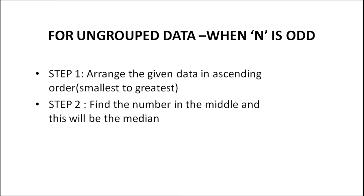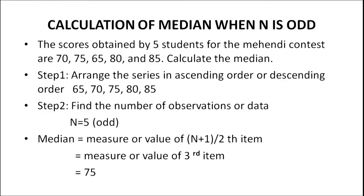Step 1: Arrange the given data in ascending order or descending order. If ascending, arrange from smallest to greatest; if descending, arrange from greatest to smallest. Step 2: Find the number in the middle — this will be the median for the given set of scores. Example of median when n is odd: the scores obtained by 5 students for the Mahanthi contest are 70, 75, 65, 80 and 85. Calculate the median.